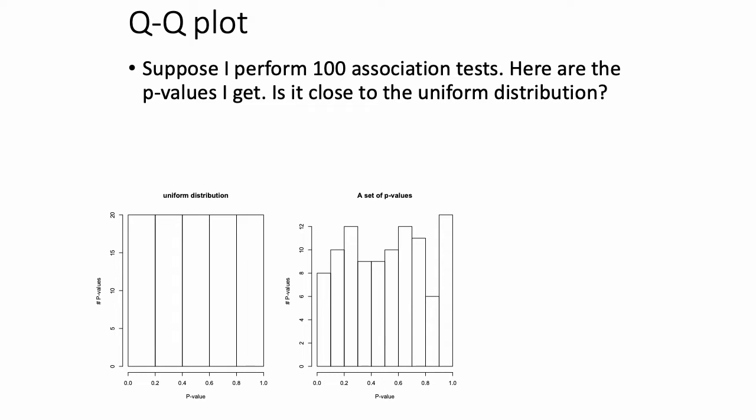The answer is: if you performed 100 independent tests in which the null hypothesis is true in every one of them, you'd expect to see one test with p-value less than 0.01. If you drew a histogram of the p-values under such a scenario where the null hypothesis is true in all of them, you'd expect to see the uniform distribution.